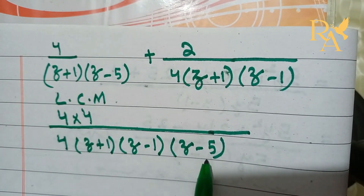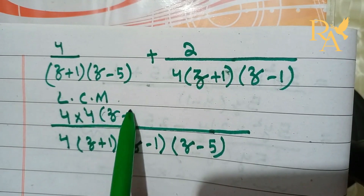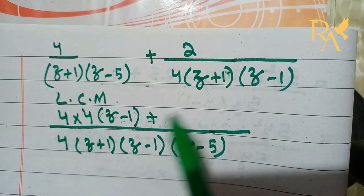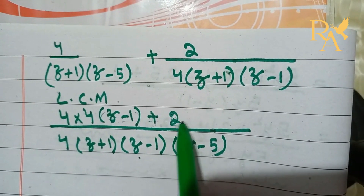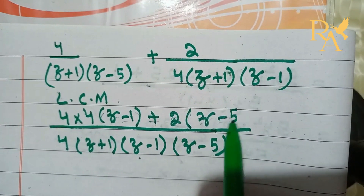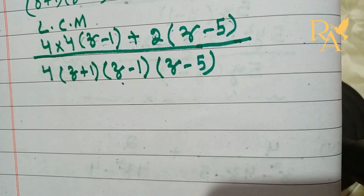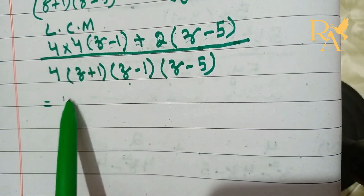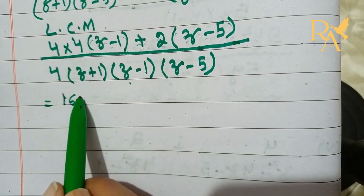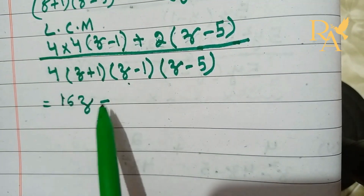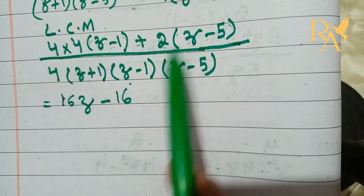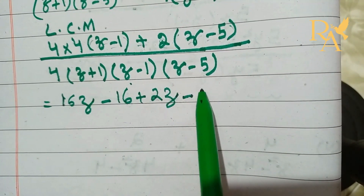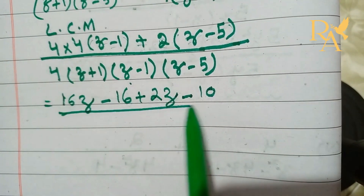z plus 1 and z minus 5 cancel, and z minus 1 is remaining. Plus, 4 cancels with z plus 1; z minus 1 cancels, leaving z plus 2, z minus 2, z minus 5. Now 4 for the 16 multiply by z; 4 for the 16, z minus 4 for the 16 into 1. Plus 2, z plus 2, z plus minus minus 2, 5 to 10 divided by 4.